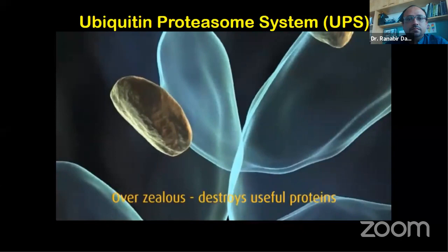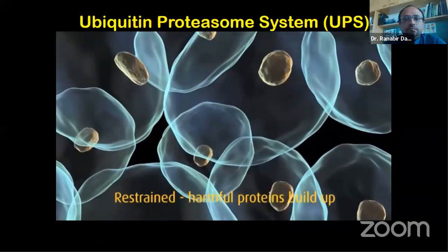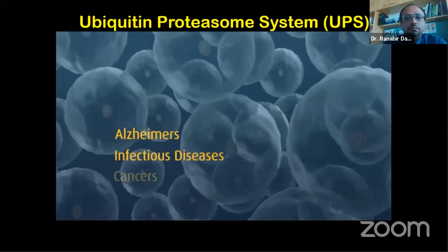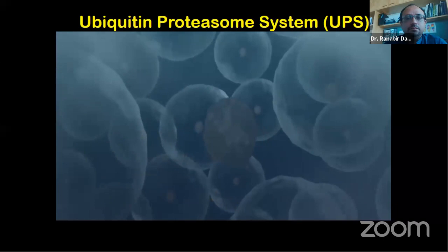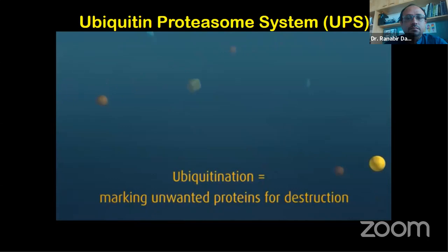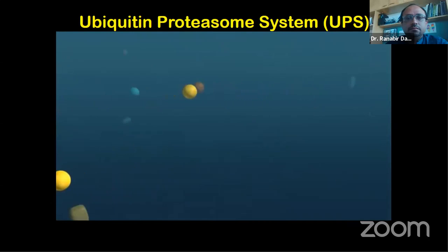The UPS can malfunction in two ways: it can become overzealous so that useful proteins are destroyed inappropriately, or it can be restrained so that potentially harmful proteins build up to toxic levels. An imbalance in the UPS is thought to occur in diseases like Alzheimer's, viral and bacterial infections, many cancers, and inflammatory diseases like rheumatoid arthritis. The UPS marks a target for destruction using a small protein found in all cells called ubiquitin. Proteins tagged with ubiquitin are given a death sentence.